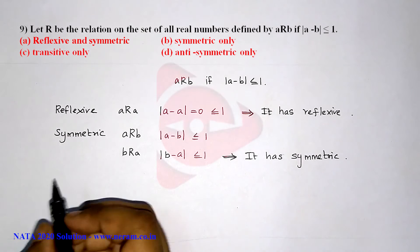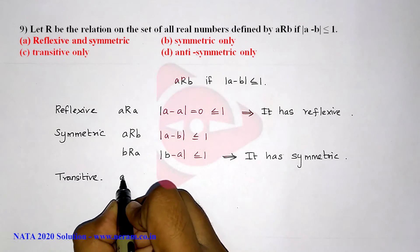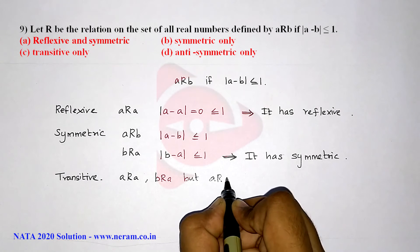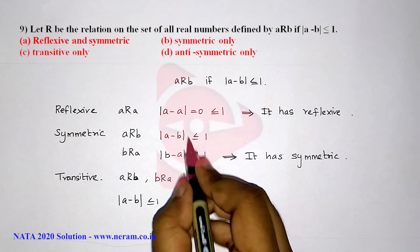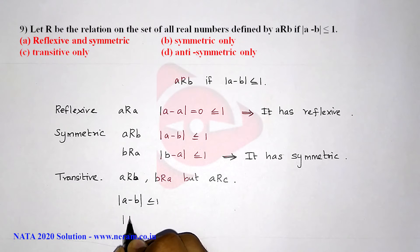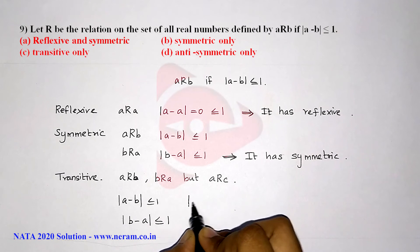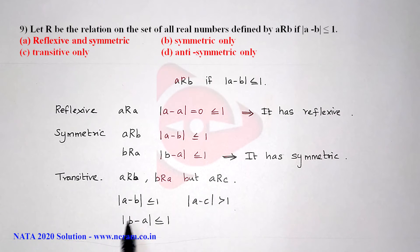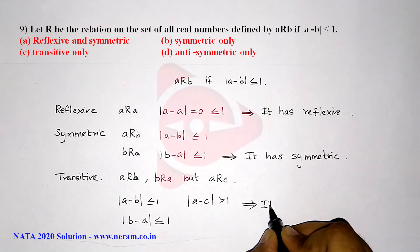Next, we check for transitive. Transitive means if aRb and bRc, then aRc. Modulus of a minus b is less than or equal to 1, and modulus of b minus c is less than or equal to 1, but modulus of a minus c can be greater than 1. So the given relation is not transitive.